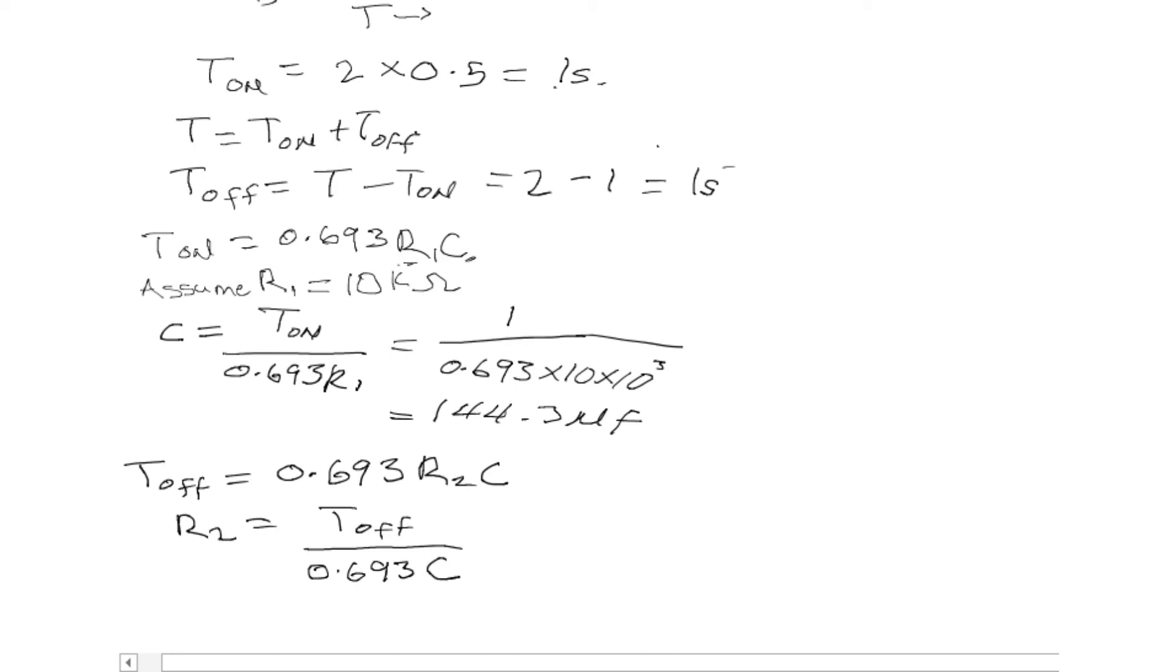We have our C, we have our T_off, we can now calculate for our R2. Our R2 will now be T_off over 0.693 C. That means it will be 1, our T_off is 1, over 0.693 times our capacitance, which we got to be 144.3 micro. After calculating it, we will be having our resistor value to be 10 kilo ohms as well.